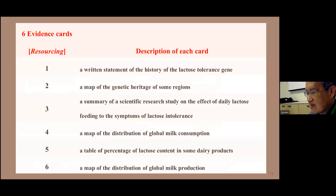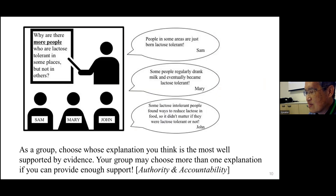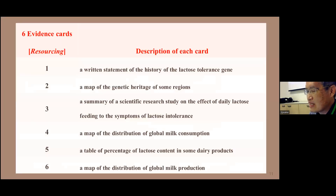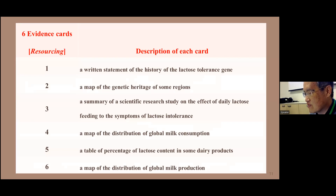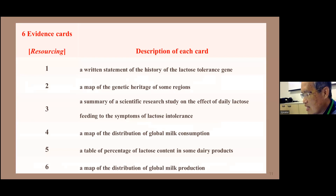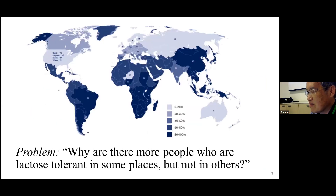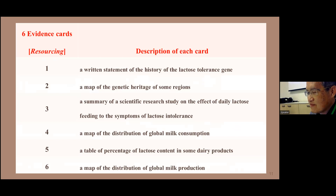It's not enough just to give students the problem and scaffold them — they need evidence. Each group was given six cards with information, such as the history of a gene or a map of the heritage of some regions. These evidence cards provided information for students to engage in sense-making and figure out the mystery of why lactose intolerance is distributed as it is across the planet.